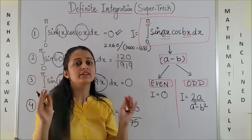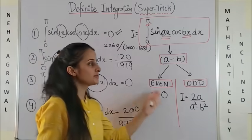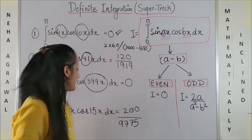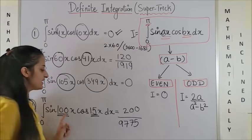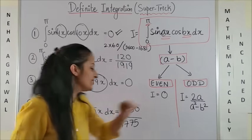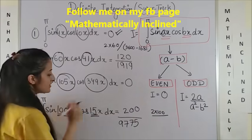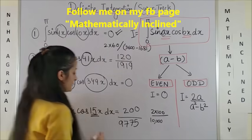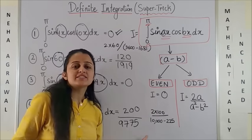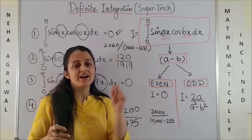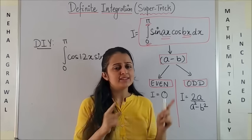Similarly, moving to the third one: 105 minus 349 — you don't have to work out the exact value, but you definitely know this gives an even number, so the answer is straight away zero. Moving to the fourth one: sin(100x) · cos(15x). 100 minus 15 is odd, so all you do is 2 × 100 upon (100² − 15²), that is 10000 minus 225, giving 200 upon 9775.